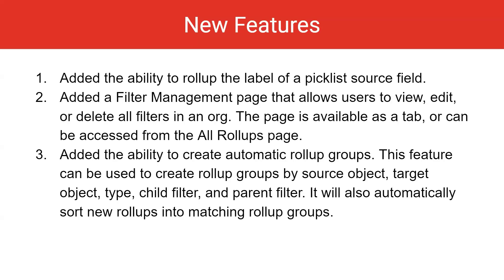There are three new features introduced in 19.4. You can now roll up the label of a picklist source field. We've also added a filter management page, which allows users to view, edit, or delete all filters in an org. This page is available as a tab or can be accessed from the all rollups page. And we've added the ability to create automatic rollup groups.